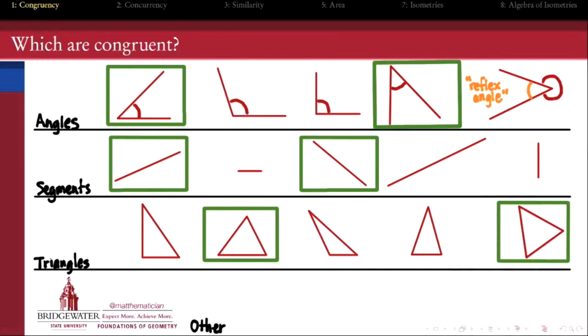In order to be congruent, what we really want is all of those features to be the same for a given pair of triangles. We want them to be made up of the same collection of line segments coming together in the same collection of angles.